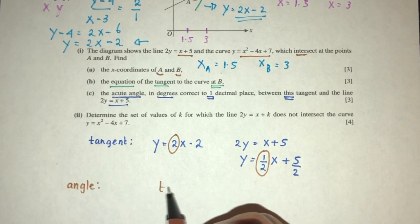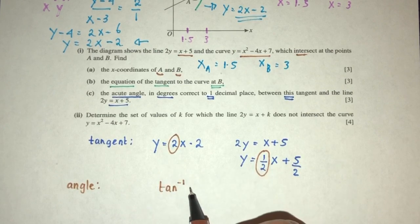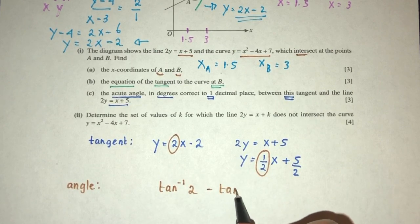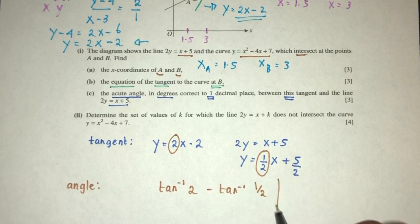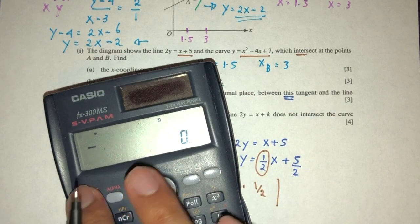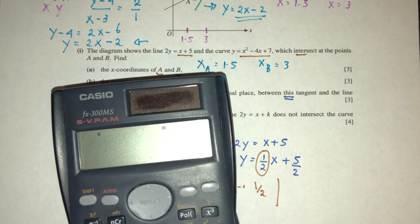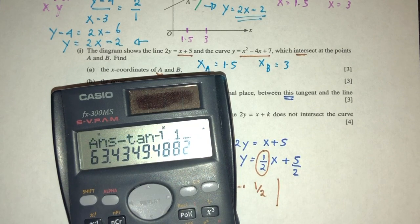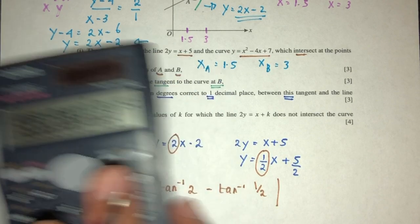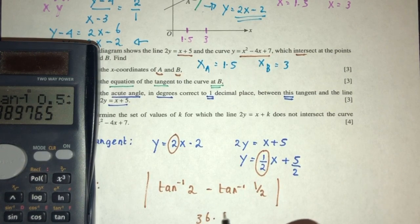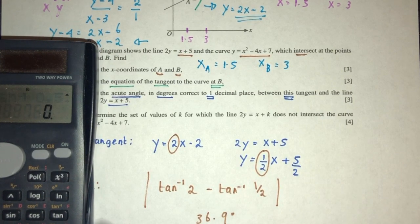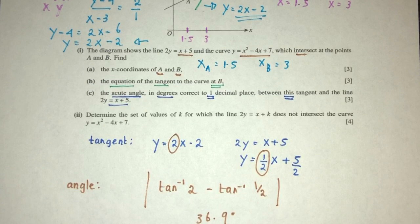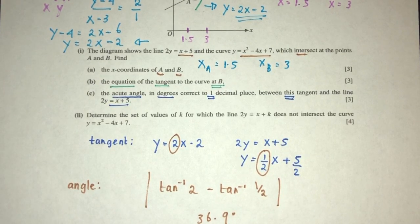Angle will be tan inverse of the angle 2 minus tan inverse of the angle half. That will be modulus. So, tan inverse of 2 minus tan inverse 0.5. That should be 36.9 degrees for your answer. This is how you find the angle between two lines by using the gradient.